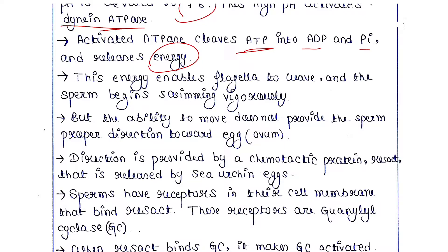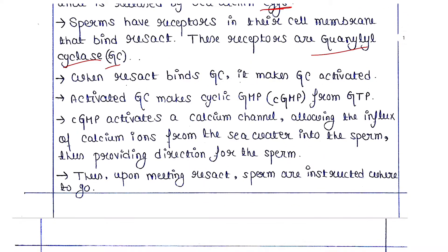The ability to move does not provide the sperm a proper direction toward the egg. Direction is provided by a chemotactic protein called resact, which is released by sea urchin eggs. Sperm have receptors in their cell membrane that bind resact. These receptors are guanylyl cyclase or GC. When resact binds GC, it activates GC, which makes cyclic GMP (cGMP) from GTP.